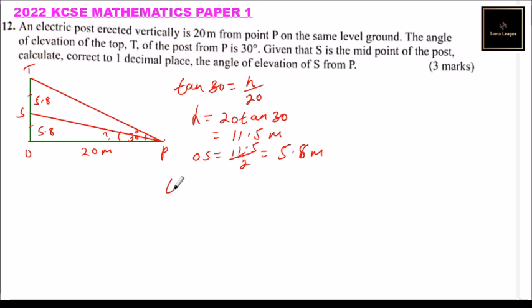Then we say tan theta is equal to opposite, which is 5.8, you divide by the adjacent, which is 20.